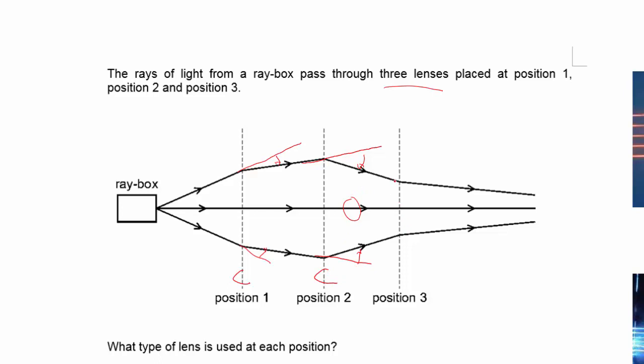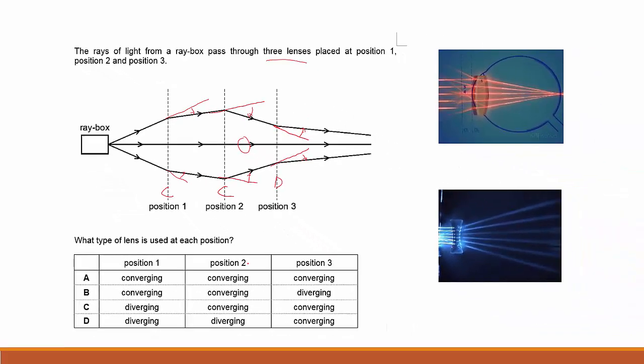What about this? After passing through the lens, instead it actually goes away from the center line. That means that it is diverging. So in this case, B is the correct answer: converging, converging, diverging.